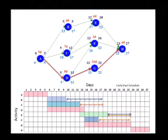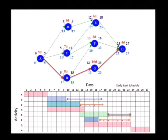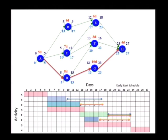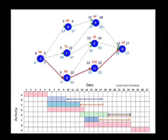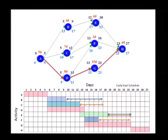Now we come to interfering float. If we take B, you can see that as B starts moving, it interferes with E. How much can it interfere with E? Five days. The first three days it does not interfere with E; the remaining five days it interferes with E. So out of eight days of total float, three days are free float and five days are interfering float. Does that give you any clue about interfering float?